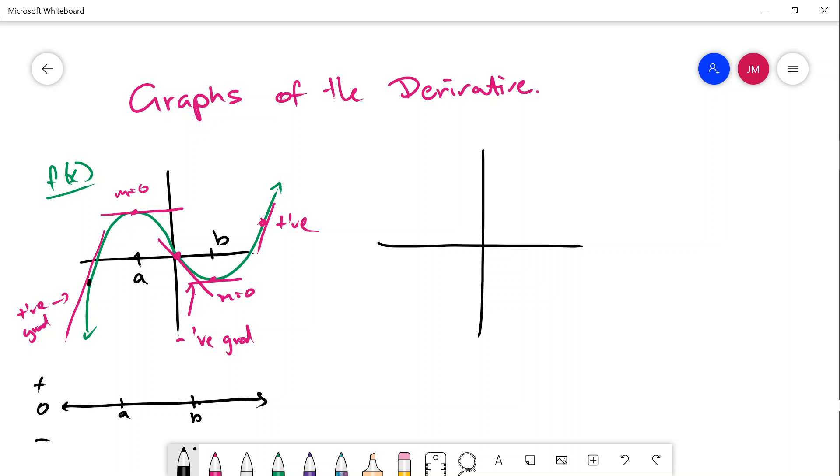At B we're at zero. To the left of A, or when x is less than A, we can see that the tangent line, no matter where I draw it along here, is going to be positive. Between A and B, no matter where the tangent line is, it's going to have a negative gradient, and then after B we've got a positive gradient.